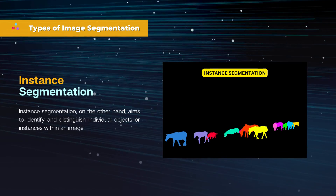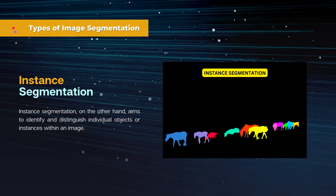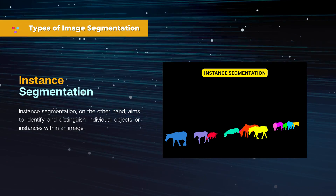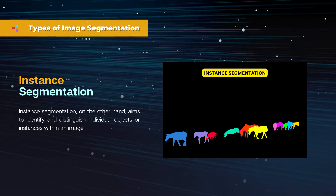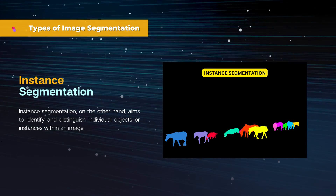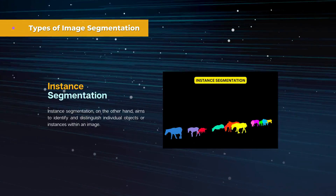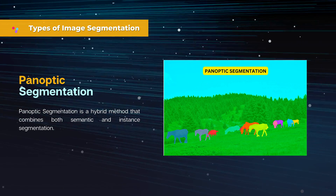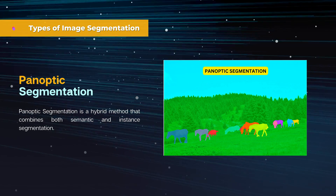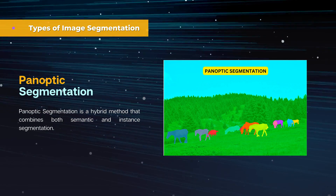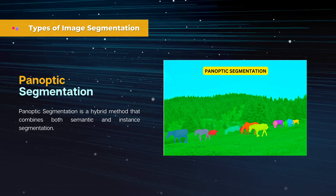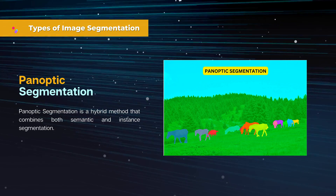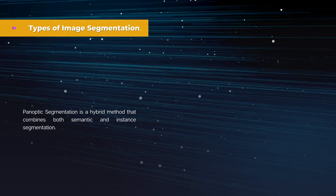Instance segmentation, on the other hand, aims to identify and distinguish individual objects or instances within an image. Panoptic segmentation is a hybrid method that combines both semantic and instance segmentation. This innovative technique will be covered in more detail in another video.